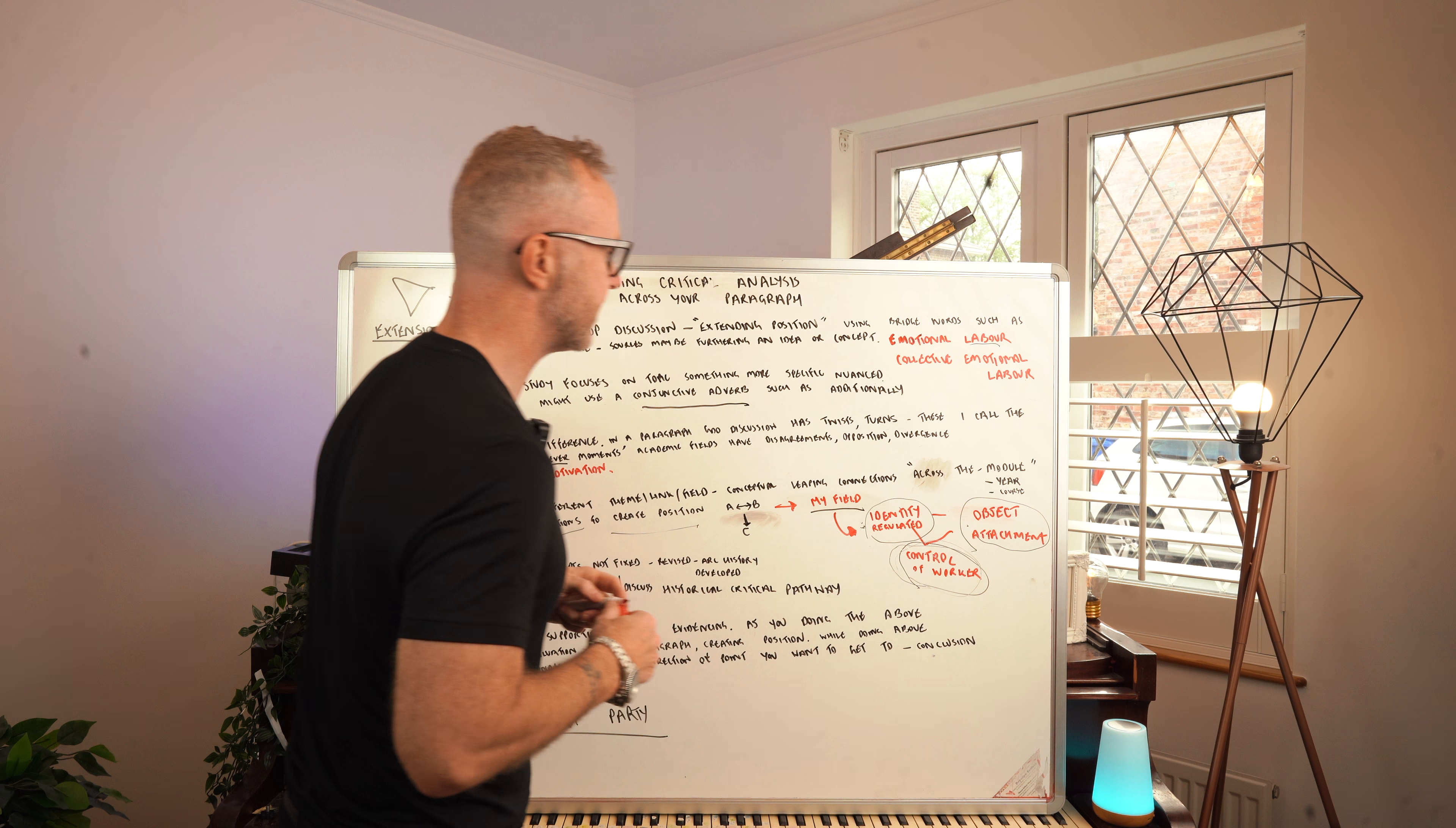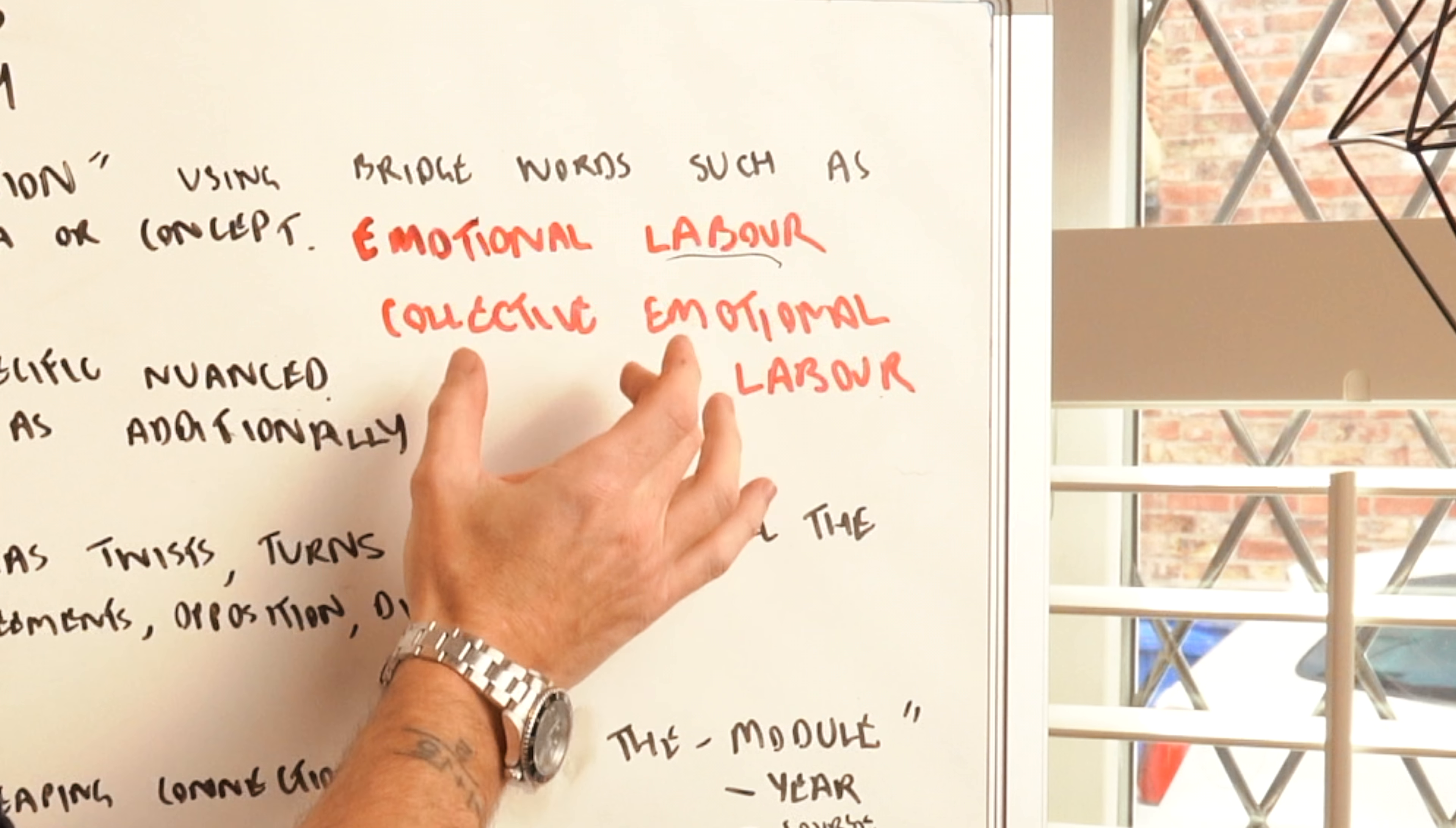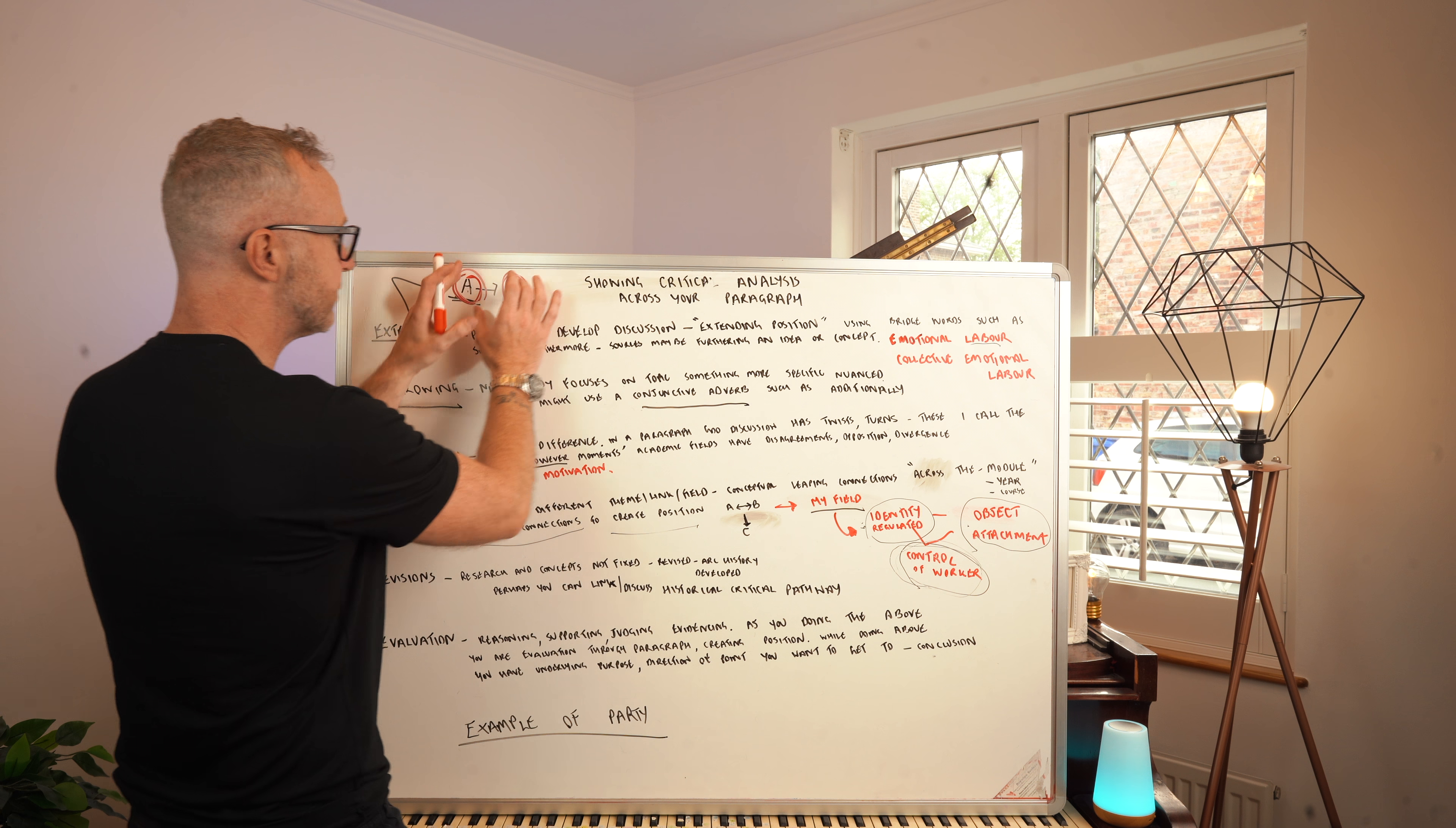A good example in my own field of management and organizations: we might be looking at a topic like emotional labour. Theorist A, thinker A, source A might be talking about emotional labour. Within your paragraph you might say similarly or furthermore, thinker B has started to maybe look at collective emotional labour. There's an extension of the thought of emotional labour to encapsulate a different way of looking at it. Importantly, you're showing this active relationship between sources. You're not just describing, you're showing these pathways, these critical pathways to show development and extensions.